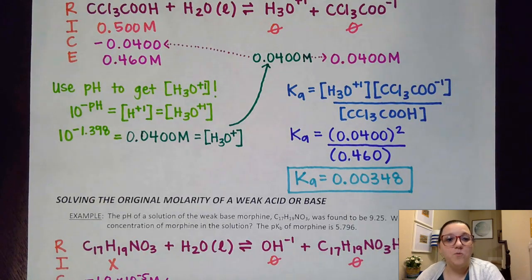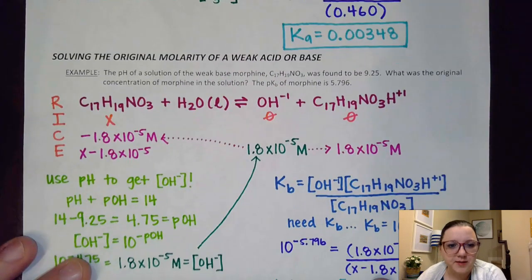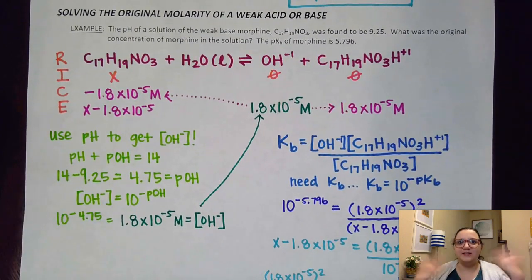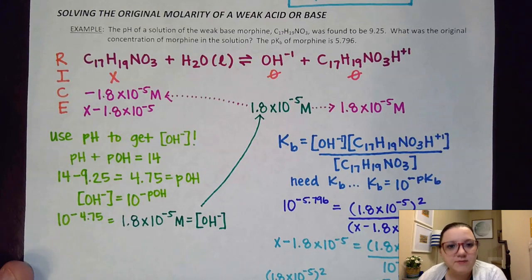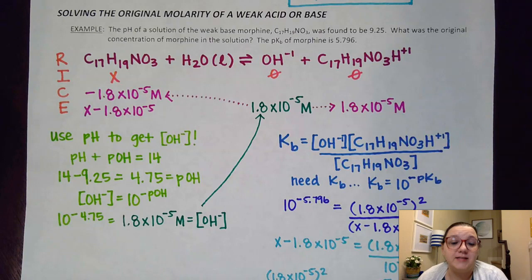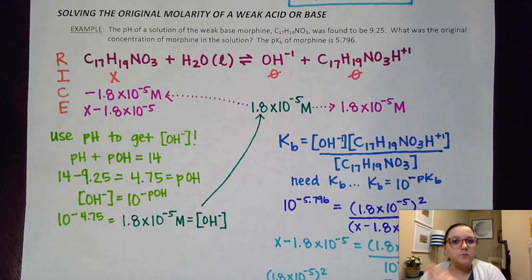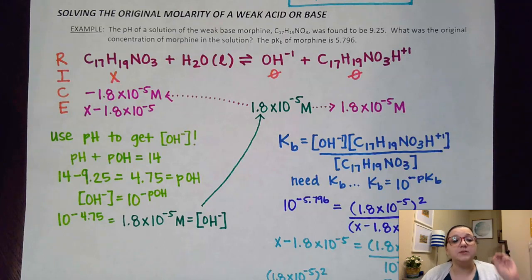Let's look at one more problem. Here they give us the pH of a weak base solution of morphine — pH = 9.25 — and we want to find the original concentration of morphine. So we're again working backwards through the RICE table to get back to that initial concentration.